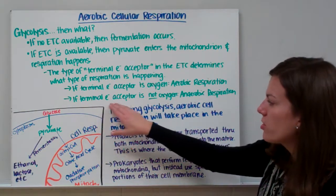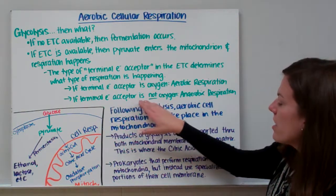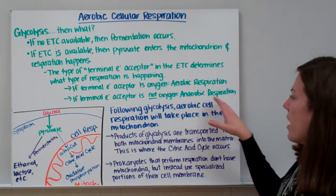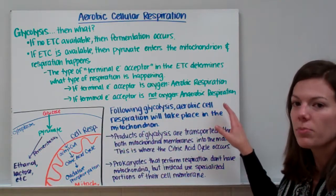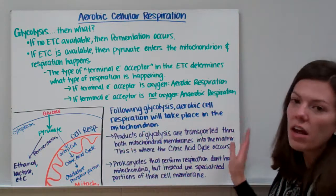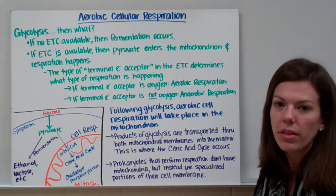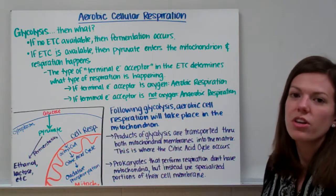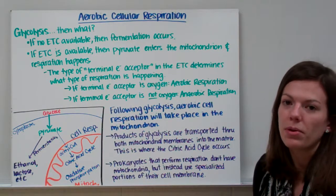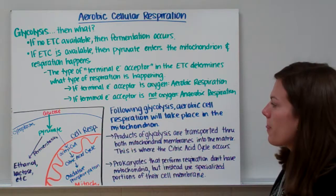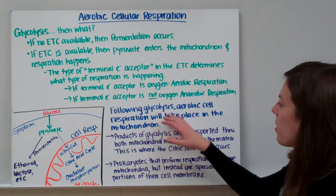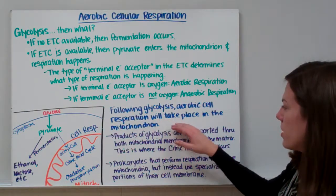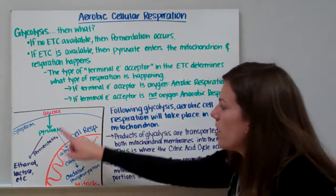If your terminal electron acceptor is not oxygen, then we call that anaerobic respiration. You can have respiration without oxygen; it's just not called aerobic respiration, it's called anaerobic respiration. Following glycolysis, aerobic cellular respiration will take place in the mitochondrion.